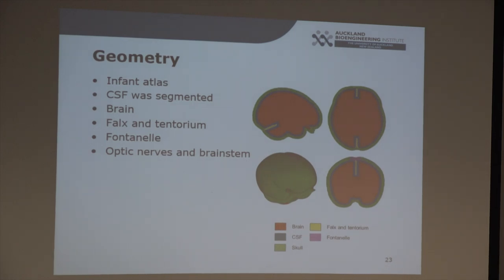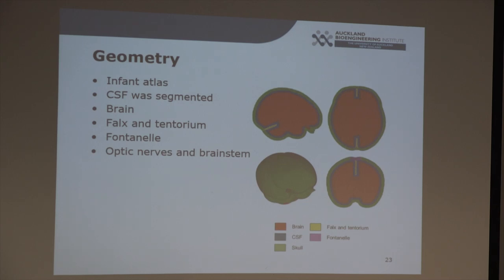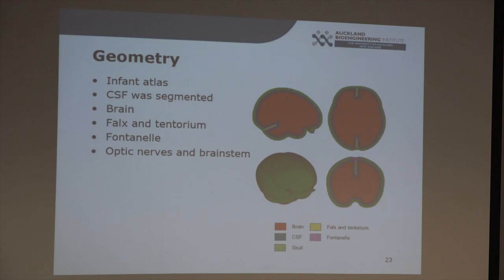For the geometry, I used an infant atlas that was readily available. I used the cerebrospinal fluid segmentation, made everything inside it the brain, and expanded it by a small amount to get the skull — I cared more about the inner surface than the outer. The falx, tentorium, fontanelle, optic nerves, and brainstem were added manually. I used literature to figure out where they should go, and then verified this by asking a few paediatricians at the hospital.